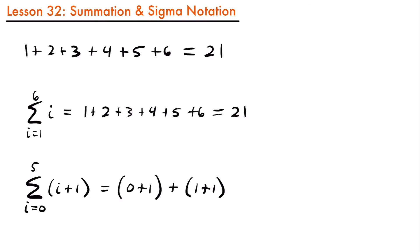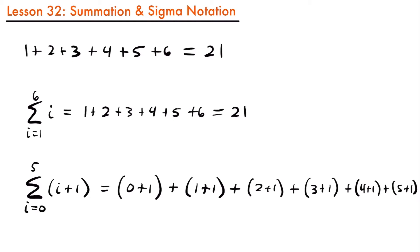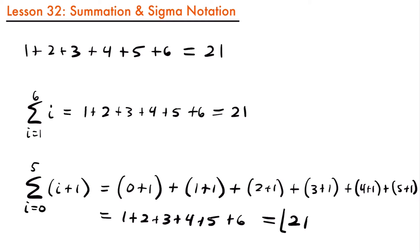Then for i equals 2, we have plus 2 plus 1. For i equals 3, plus 3 plus 1. And for i equals 4 and 5, plus 4 plus 1 plus 5 plus 1. If we simplify, this equals 1 plus 2 plus 3 plus 4 plus 5 plus 6 — the same thing we had before — and that is still equal to 21.